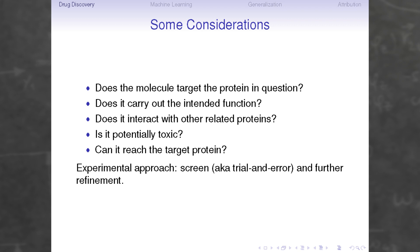Here's a list of some prominent considerations in the drug discovery process. We want to know whether our candidate molecule targets the protein we're interested in, whether it targets the protein with the correct function — does it activate, deactivate, or modify the protein in the way we want — and whether it's specific, interacting with our target protein and not with closely related proteins, which is often a big problem. We also want to know whether it's toxic and whether it can actually reach the target protein physiologically, which is harder for proteins inside the cell or nucleus. The general approach to all these problems is via screening — essentially a trial-and-error process where we have a collection of candidate molecules, try all of them, and see which ones work best, then perform refinements based on domain knowledge.